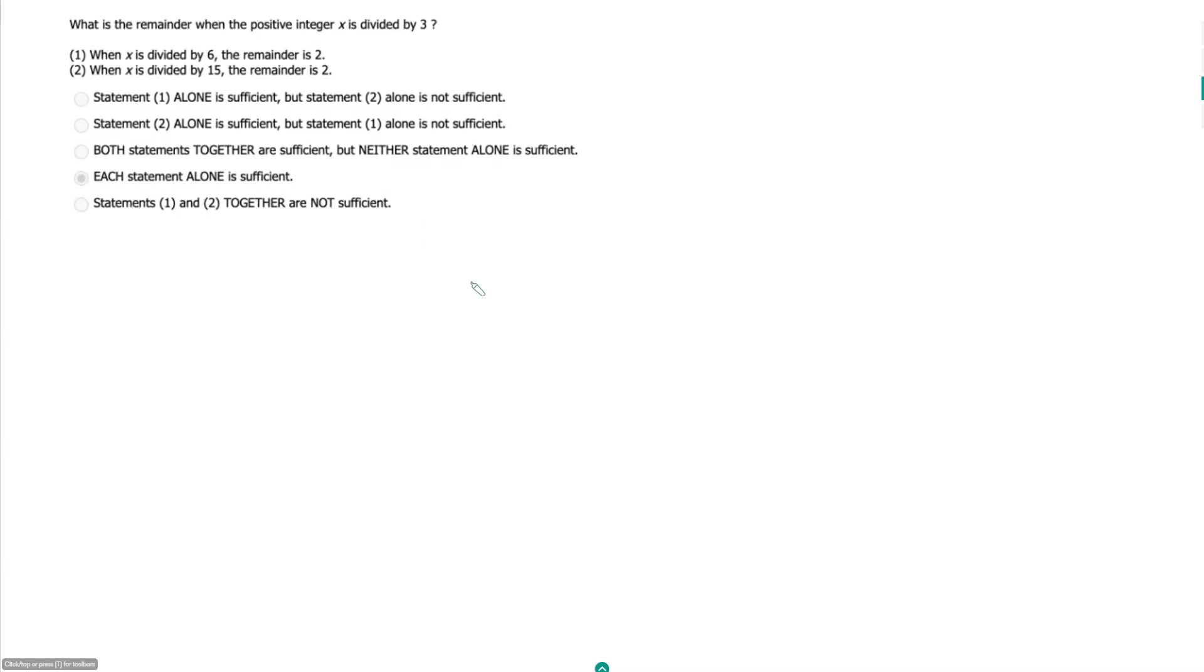What is the remainder when the positive integer x is divided by 3? So we don't know anything about x, but even so, we do know something about the remainder when we divide by 3 because our remainder always has to be less than our divisor, the thing we are dividing by.